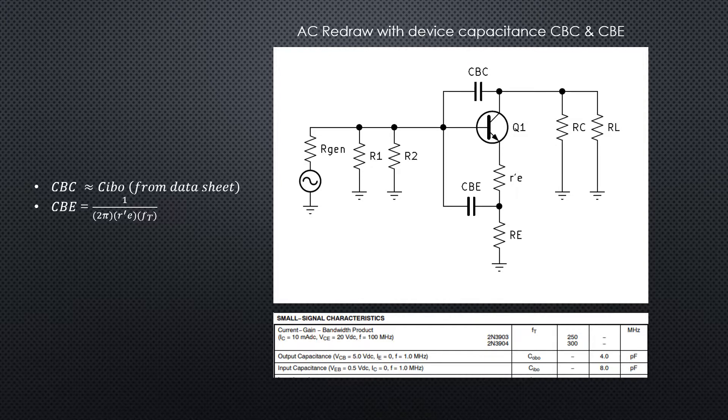Now let's consider the device capacitance of the transistor. We've got two new capacitances to look at: CBC, which is the capacitance base to collector, and CBE, which is the capacitance base to emitter. CBC is approximately equal to CIBO, the input capacitance included on the data sheet.